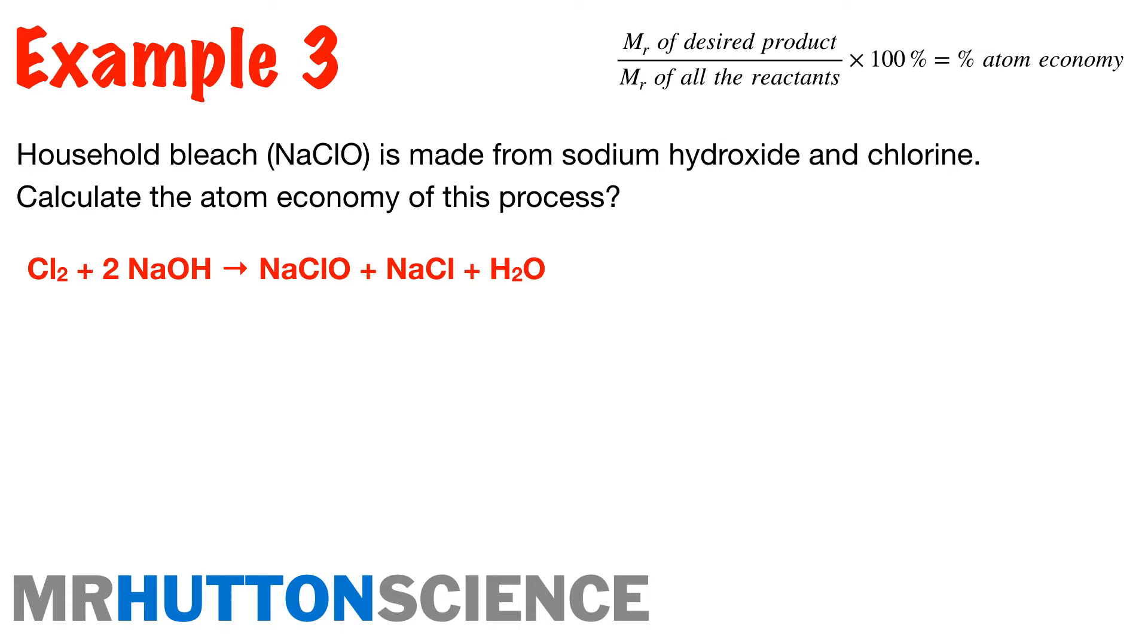All right, hopefully you came up with this equation here. So Cl2 plus 2 NaOH reacts to give us NaClO plus NaCl plus H2O. Right, so our desired product here, the household bleach, is our desired product, the NaClO. And the MR of our reactants is going to be the Cl2 plus the 2 NaOH.